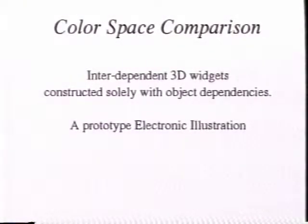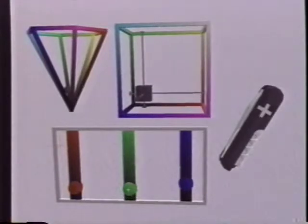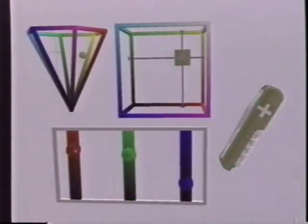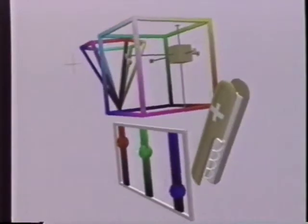These color space widgets combine behavior and geometry in a prototype interactive illustration. We can change the knife's color by dragging the 3D sliders for red, green, and blue components.